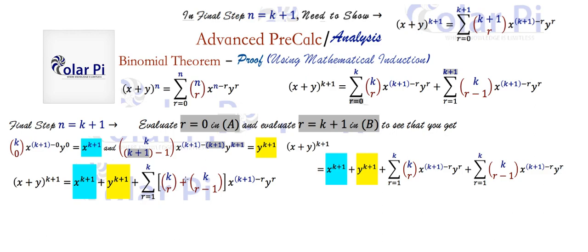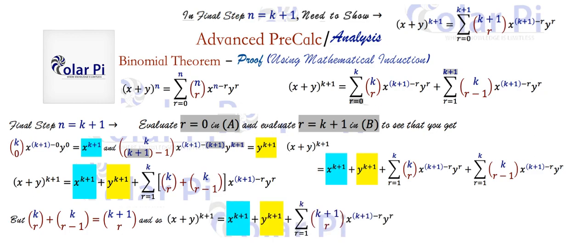Now, we have a nice property that will allow us to combine these two binomial coefficient expressions: k choose r plus k choose (r−1) equals k+1 choose r. It's easy enough to show that this is true — it's Pascal's identity. So we can replace k choose r plus k choose (r−1) with k+1 choose r, which is looking more and more like where we need to get to.